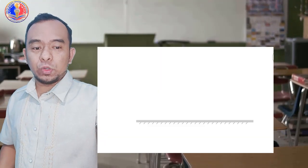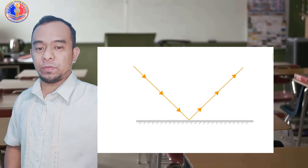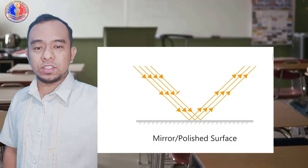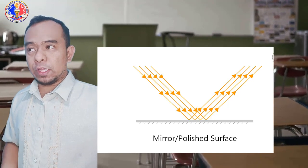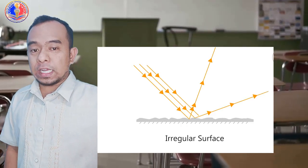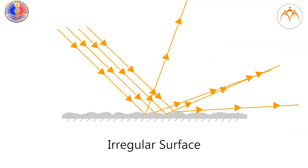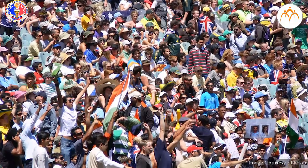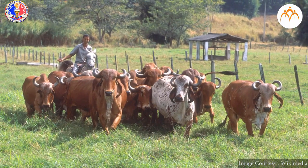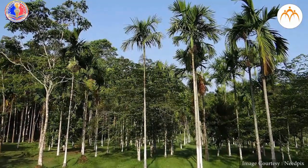Reflection of light is the bouncing back of light into the same medium it has been traveling after striking a surface. Reflection of light can occur on rough surfaces or smooth surfaces. Smooth surfaces like the mirrors which can be spherical or plane mirrors. All these reflections of light are governed by what we call the law of reflection.